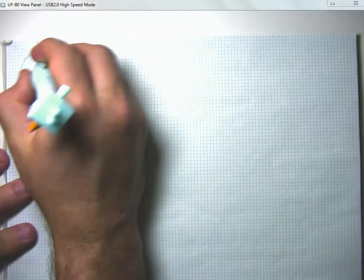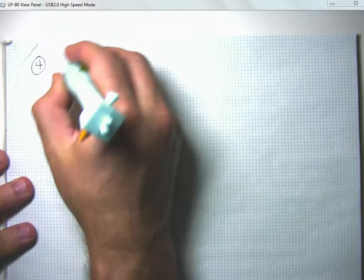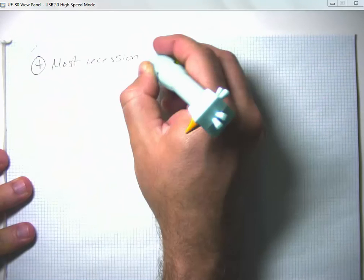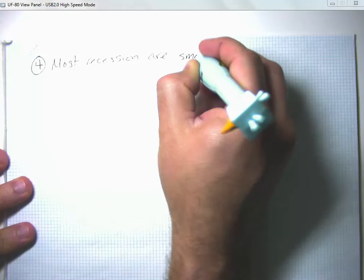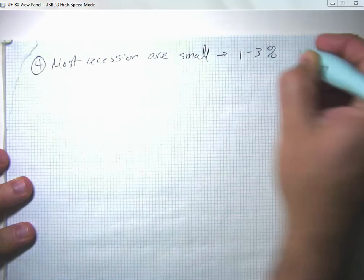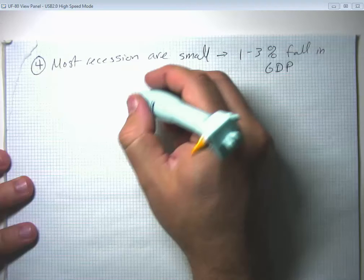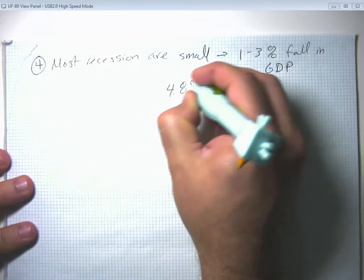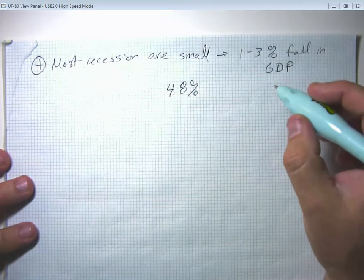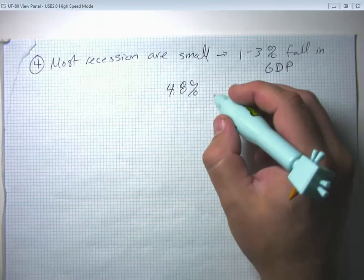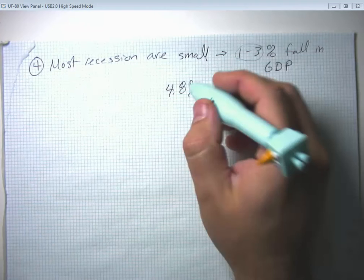One more stylized fact: most recessions are surprisingly small. In the grand scheme of things, most recessions cause a 1% to 3% fall in GDP. Our most recent Great Recession was something like 4.8%, so it really was extraordinarily large — it isn't just people being sensationalistic to claim it was very large. But most recessions are pretty small.